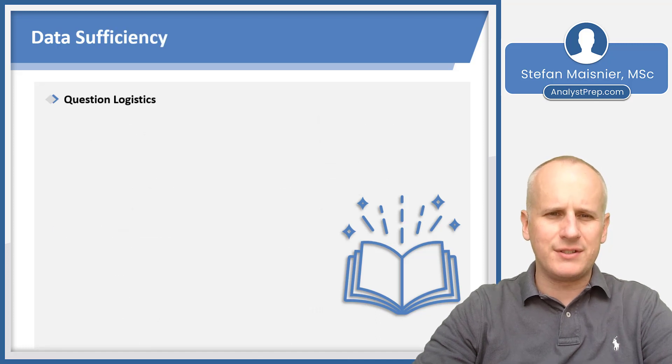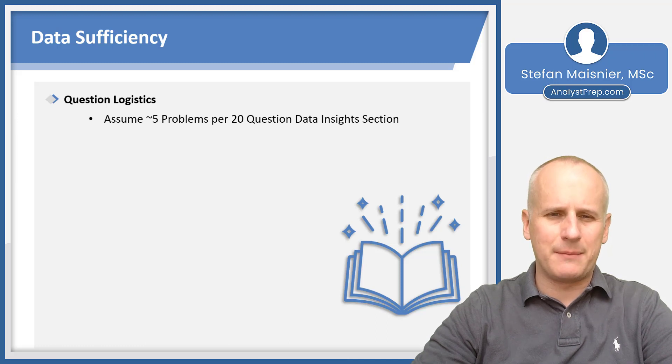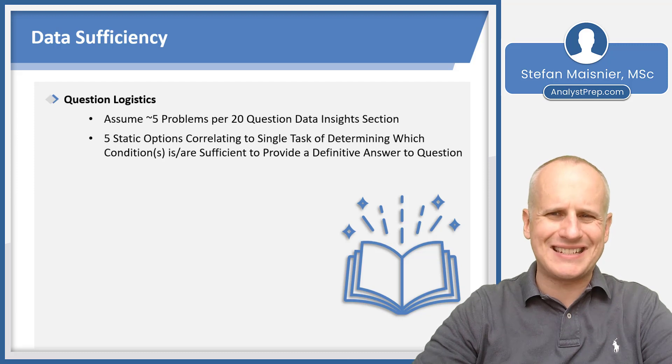Now, the question logistics for data sufficiency are the same if you recognize this type, but you're going to only have approximately five data sufficiency problems in the 20-question Data Insight section, and you will still have five static options correlating to the single task of determining which condition is or which conditions are sufficient to provide a definitive answer to whatever the question was without necessarily solving to completion, and you'll still have two formats for data sufficiency questions on the GMAT Focus Edition, either value where you're being asked if one particular value is possible based on the information provided, or yes-no, which means that the answer is always yes or always no to the question that is provided.